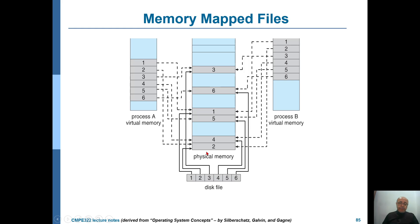For the case of shared memory, let's say we have two processes A and B. From the point of view of process A, it appears like all of these pages are in the process's address space, placed consecutively one after another.